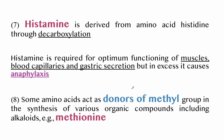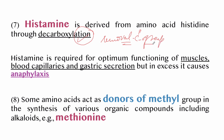Tyrosine gives rise to two hormones — thyroxine and adrenaline — and the skin pigment melanin. Beta-alanine is a derivative of aspartate and takes part in the formation of coenzyme A and pantothenic acid (vitamin B5). Histamine is derived from the amino acid histidine through decarboxylation — the removal of the COO group.